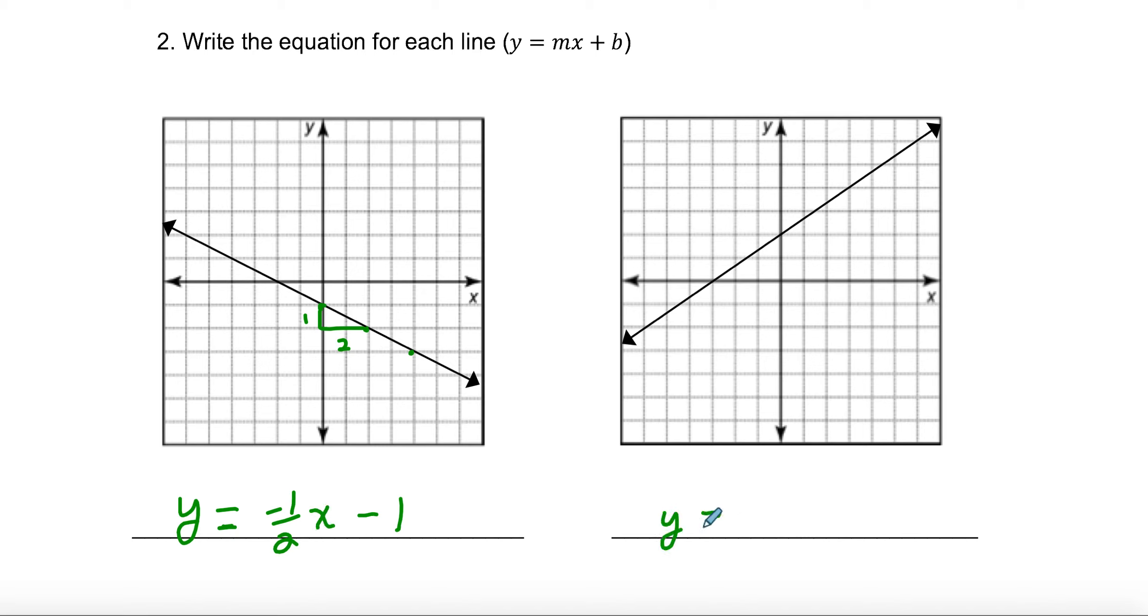This one over here, if you want to start with the y-intercept first, you know it's plus 2. This equation is going to end with plus 2 because that's the y-intercept. From that intercept, I see a clear point over there. If I draw my right triangle in, that looks like a rise of 2 and a run of 3. So I know my slope is 2 over 3x plus 2 would be my equation.